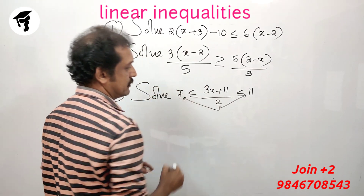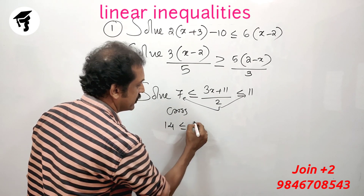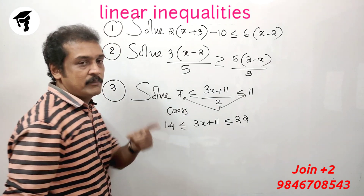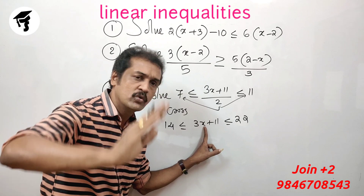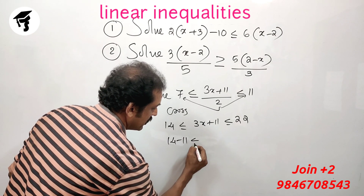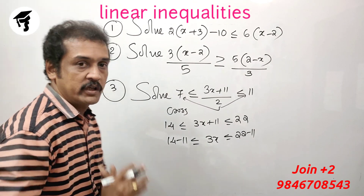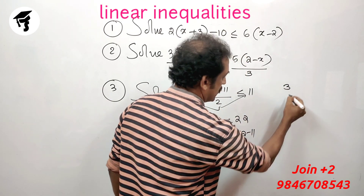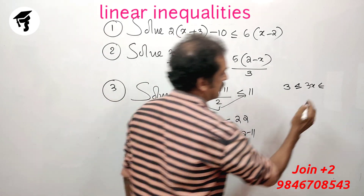This is 2 into 7, then we cross multiply the number 2 into 7. That gives us 14 less than or equal to 3x plus 11 less than or equal to 22. Now subtract 11: 14 minus 11 is 3, less than or equal to 3x, less than or equal to 22 minus 11 is 11.